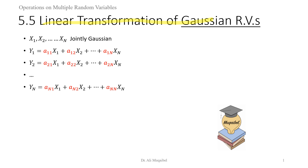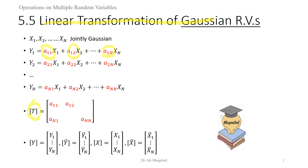We're using the same number of inputs and outputs — in general they could be different, we could have Y1, Y2, up to YM, but we're just making it the same. If we pick the coefficients shown in red, these relate Y to X. We can form a transformation matrix T made of all the entries. This transformation is linear, so the output is a scaled version of the input random variables.